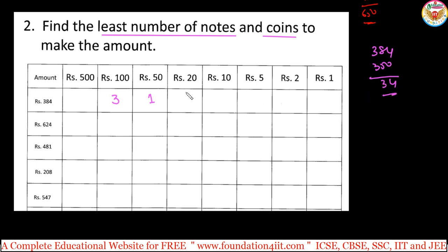For the remaining 34: take 1 note of 20 and 1 note of 10 — that is 30 — leaving 4. You cannot take a 5-rupee note; take 2 coins of 2 rupees. This gives the minimum, the least number of notes and coins to make 384.